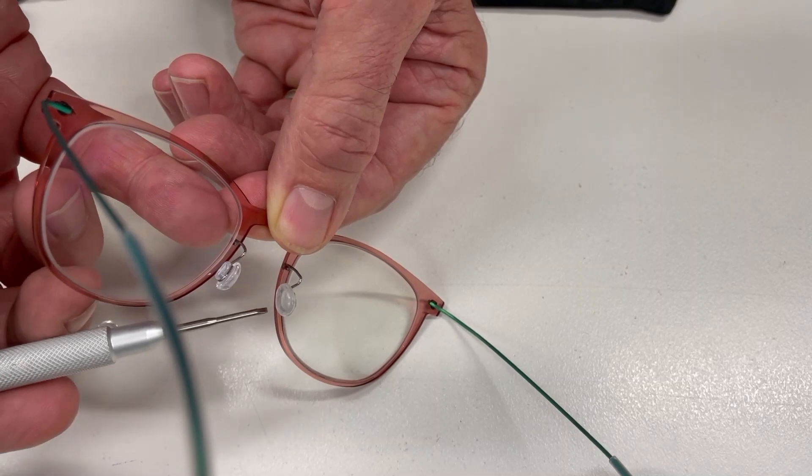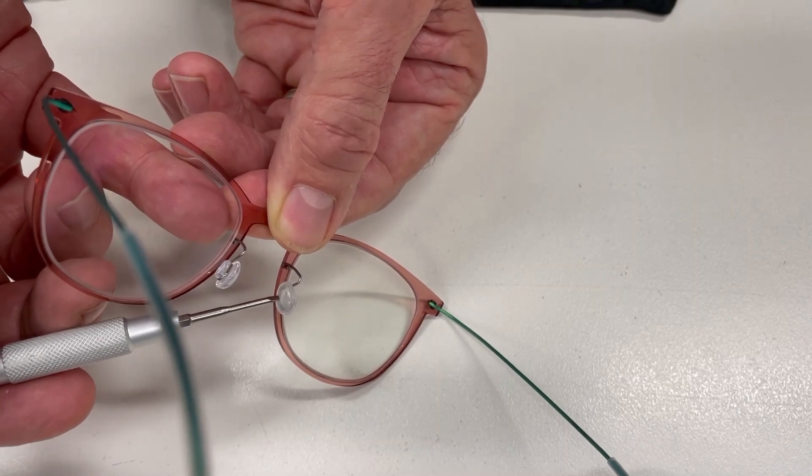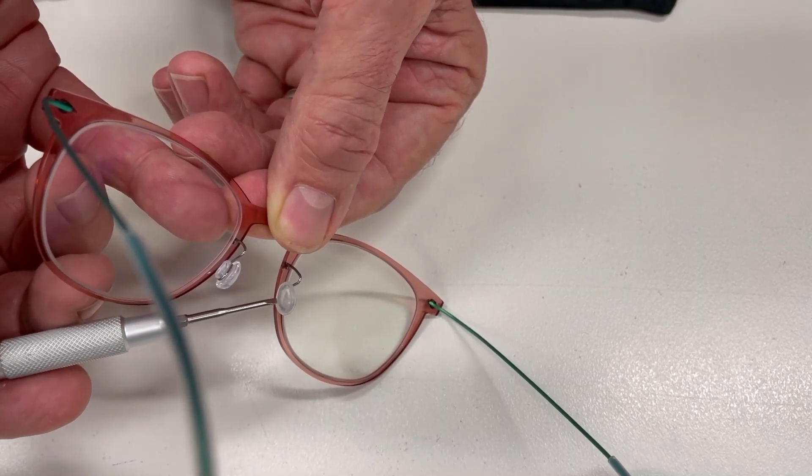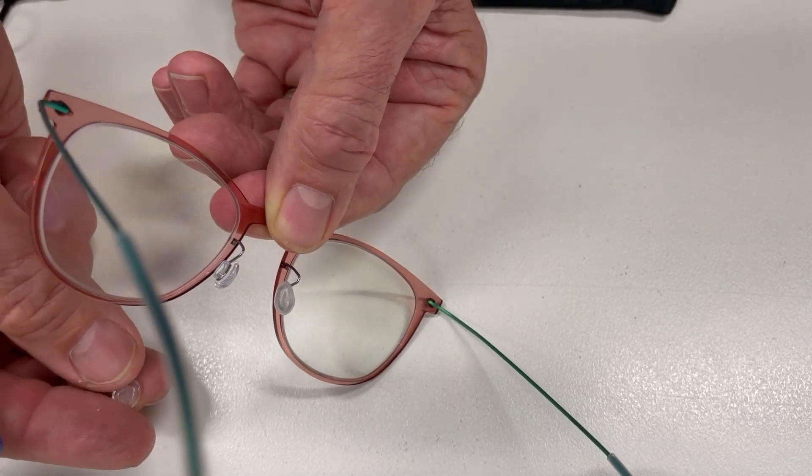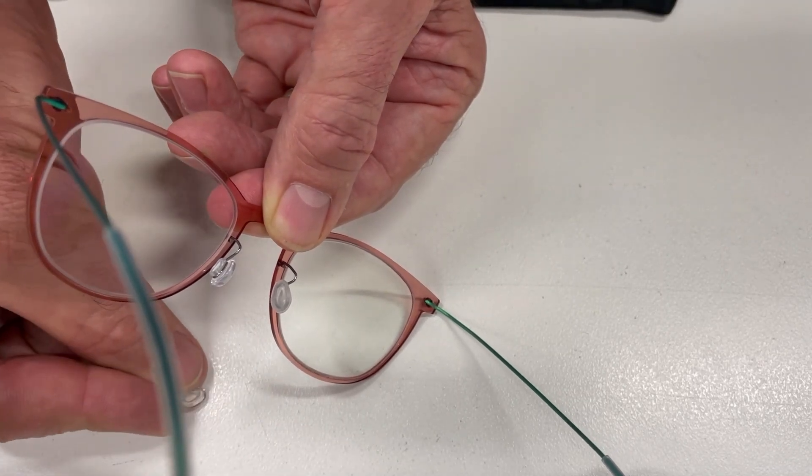You can see this one I've already changed. The other on the right-hand side is the one we're going to change—you can see it's a little discolored. The new pads come as a pair.